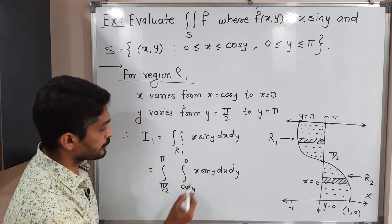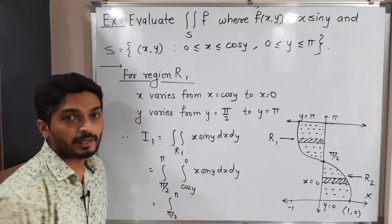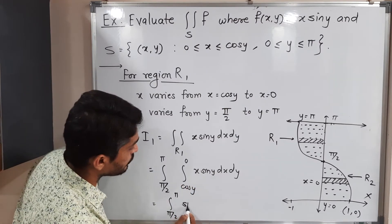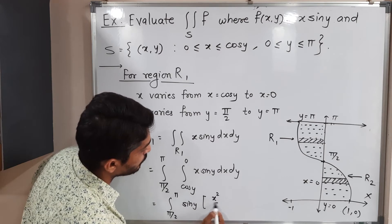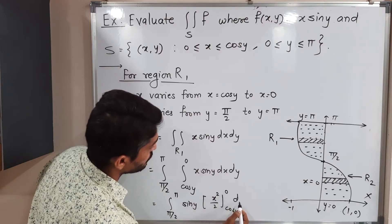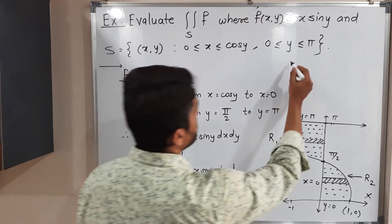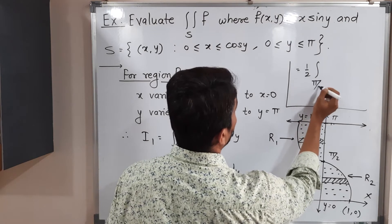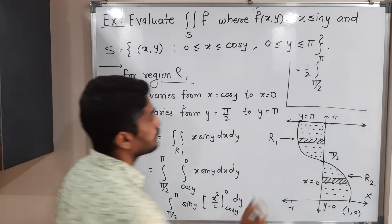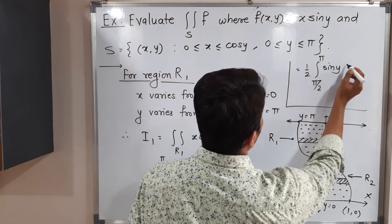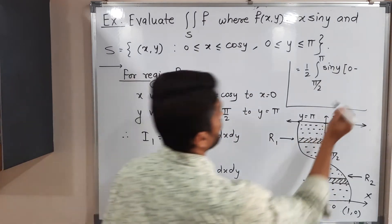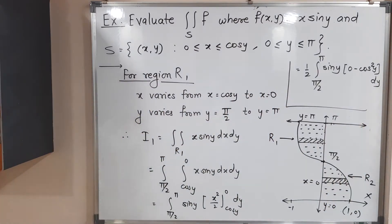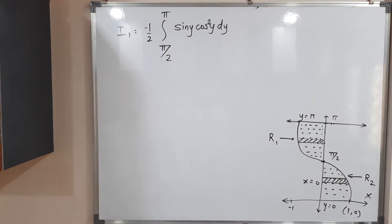Integrating with respect to X first: sin Y is a function of Y, so it is constant and comes outside. The integral of X is X²/2, evaluated from cos Y to 0. Putting in the limits: the upper limit gives 0 and the lower limit gives cos²Y. So we get minus one-half times the integral from π/2 to π of sin Y · cos²Y dy.